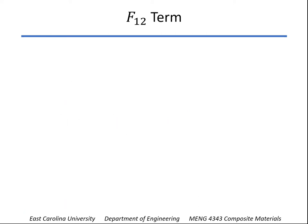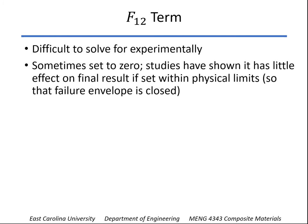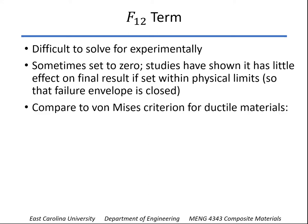And that one is the F1-2 term. And it's really difficult to find this experimentally. There have been some attempts to do that. But it's also been shown that if you look at the extreme values of what this can be within its physical limits, that it doesn't really have much effect on the final result. So a lot of times you'll see texts just say, well, just set it equal to zero.